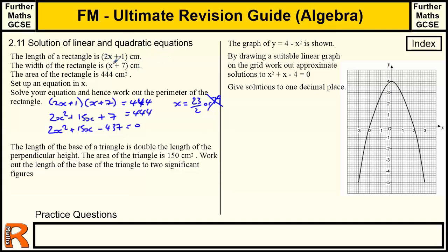And with 11 and a half, the length of the rectangle is going to be, well, it's going to be 23 plus 1 is 24. And the width is going to be 11 and a half plus 7. It's going to be 18 and a half.